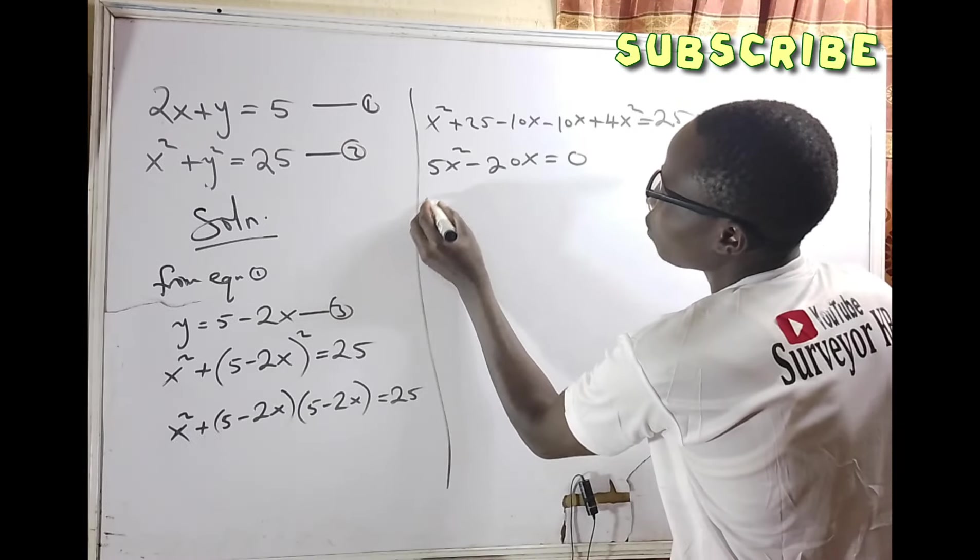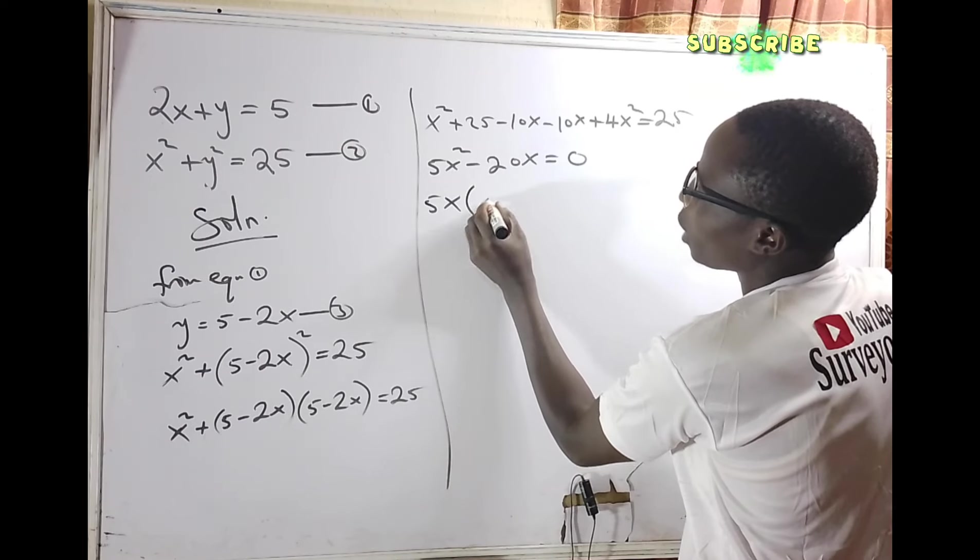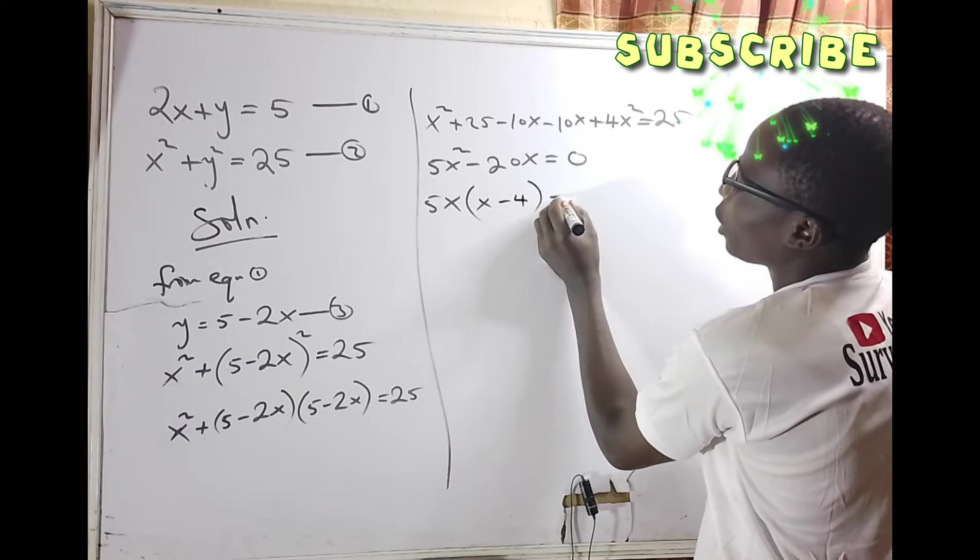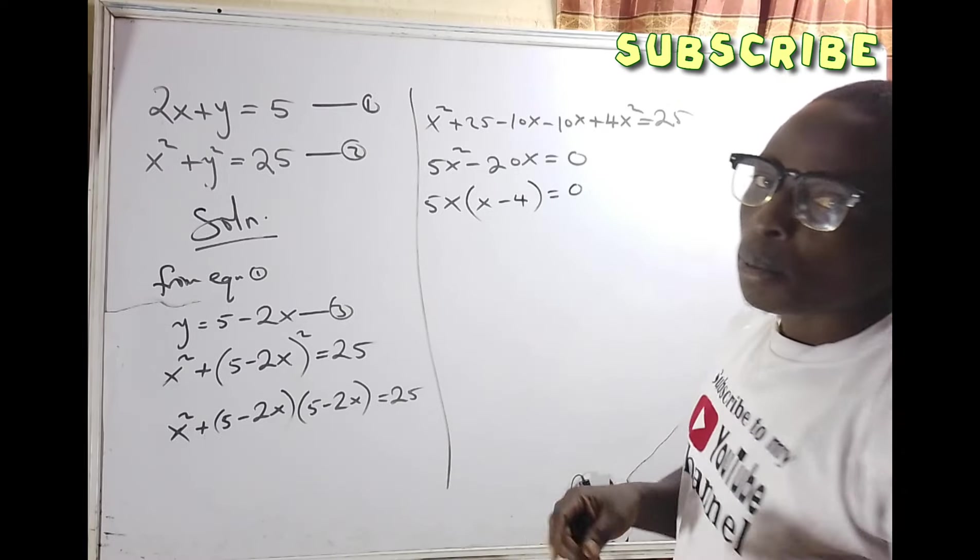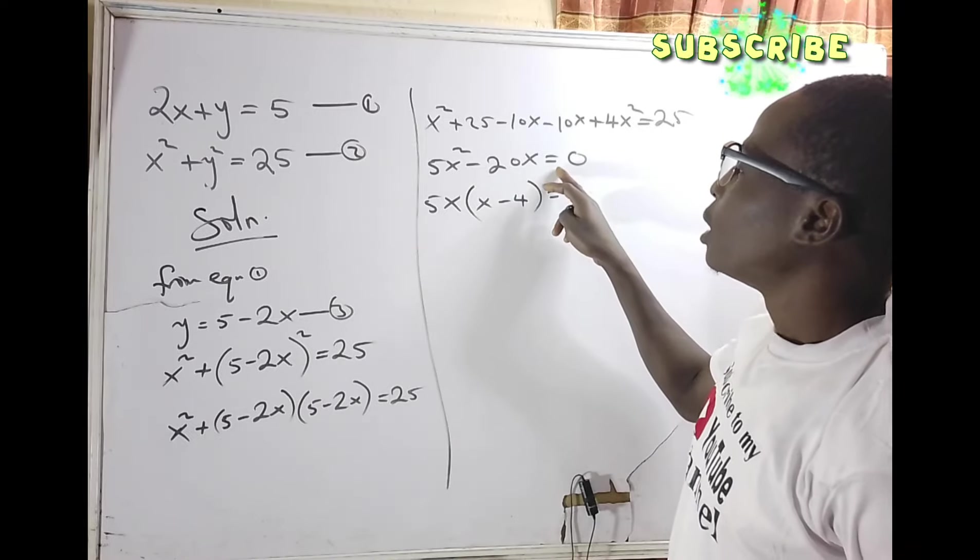I have something in common which is 5x. I need to factor 5x out, which gives 5x bracket open, x minus 4 bracket close equals zero.